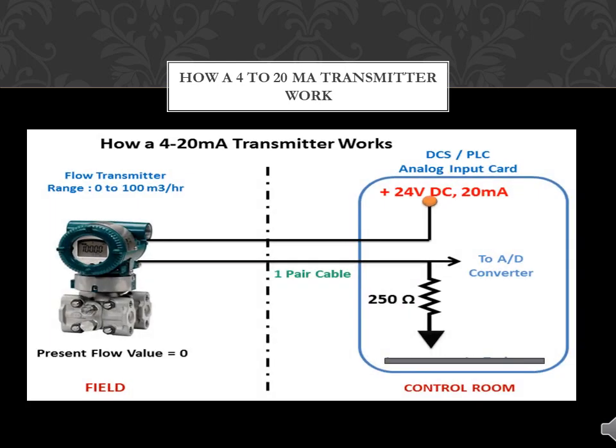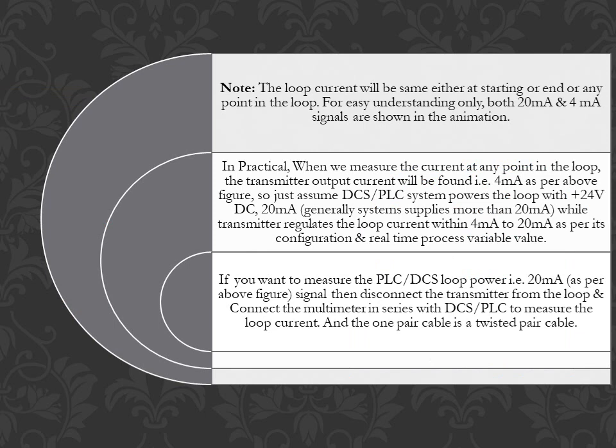Note: the loop current will be the same either at the start, end, or any point in the loop. For easy understanding only, both 20mA and 4mA signals are shown in the animation. In practice, when we measure the current at any point in the loop, the transmitter output current will be found — i.e., 4mA as per the above figure. The DCS/PLC system powers the loop with +24VDC, 20mA; generally the system supplies more than 20mA, while the transmitter regulates the loop current to 4mA as per its configuration and real-time process variable value. If you want to measure the PLC/DCS loop power, disconnect the transmitter from the loop and connect the multimeter in series with DCS/PLC to measure the loop current. The one-pair cable is a twisted pair cable.